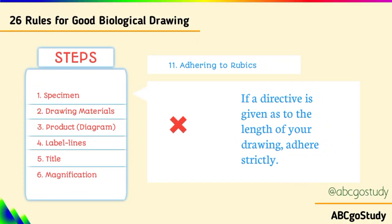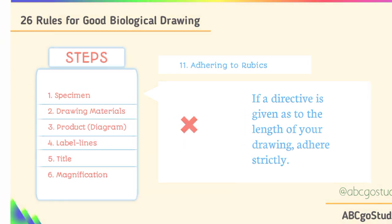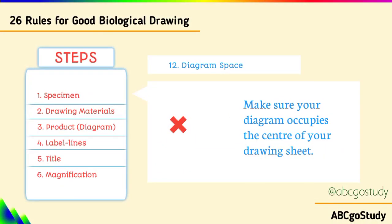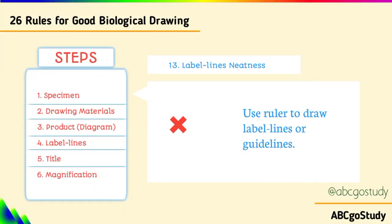Number eleven, adhering to rubrics: if a directive is given as to the length of your drawing, adhere strictly to it. Number thirteen, label lines neatness: use a ruler to draw label lines. Guidelines should be straight and horizontal — don't draw vertical guidelines or unstraight ones. They should touch the part you are trying to label.